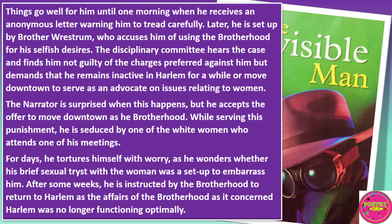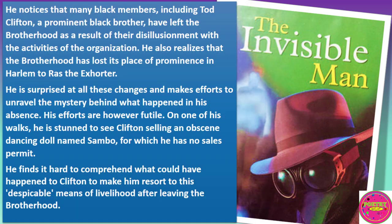The narrator accepts the offer to move downtown while serving his punishment. He is seduced by a white woman who attends one of his meetings. For days he tortures himself with worry, wondering whether his brief sexual encounter with the woman was a setup to embarrass him. After some weeks he is instructed by the Brotherhood to return to Harlem, as the affairs of the Brotherhood as concerned Harlem were no longer functioning optimally. He notices that many black members, including Todd Clifton, a prominent black brother, have left the Brotherhood as a result of their disillusionment with the activities of the organization. He also realizes that the Brotherhood has lost its place of prominence in Harlem to Ras the Exhorter. He is surprised by all these changes and makes efforts to unravel the mystery behind what happened in his absence, but his efforts are futile.